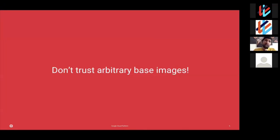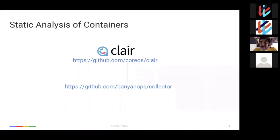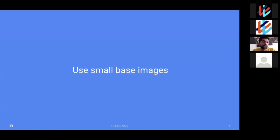That arbitrary base image may use old versions of code with exploits, may have bugs, or could have malware bundled in on purpose. One thing you can do is run static analysis of containers. CoreOS has Claire, and there are a lot of open source tools available. These scan your container and look for known vulnerabilities — for example, an old version of Node.js with a remote code execution exploit. But I highly recommend starting from the smallest base image possible and building from scratch, installing your packages manually instead of relying on other people's base images. Using small base images that you trust is very important.